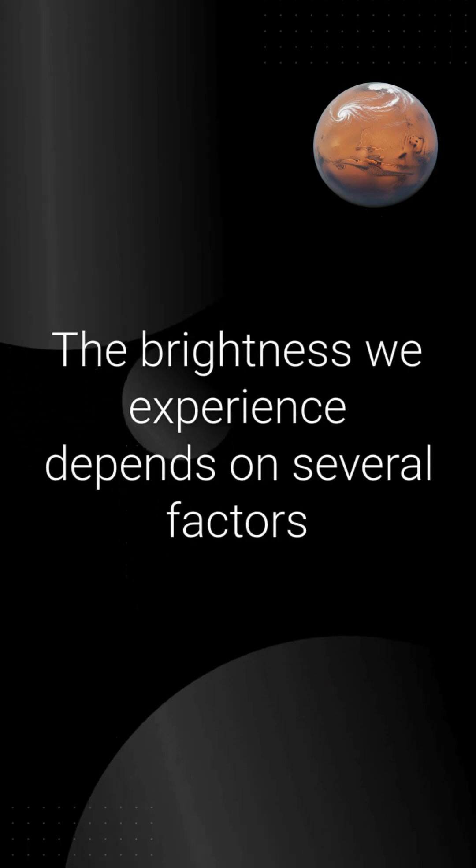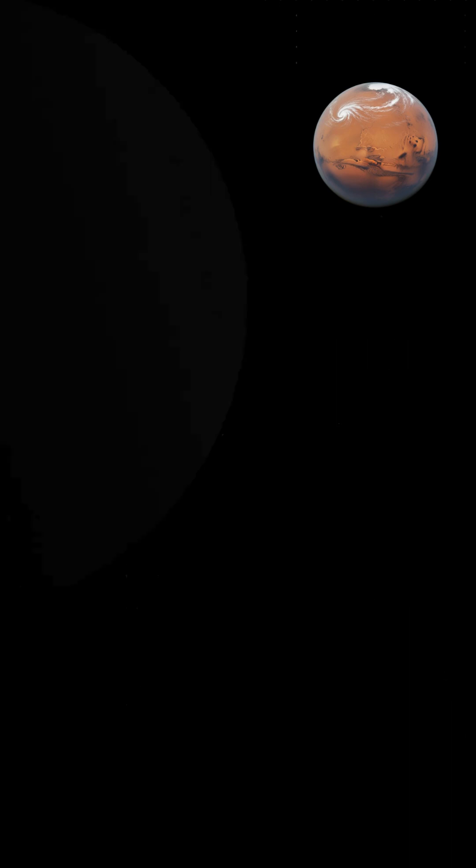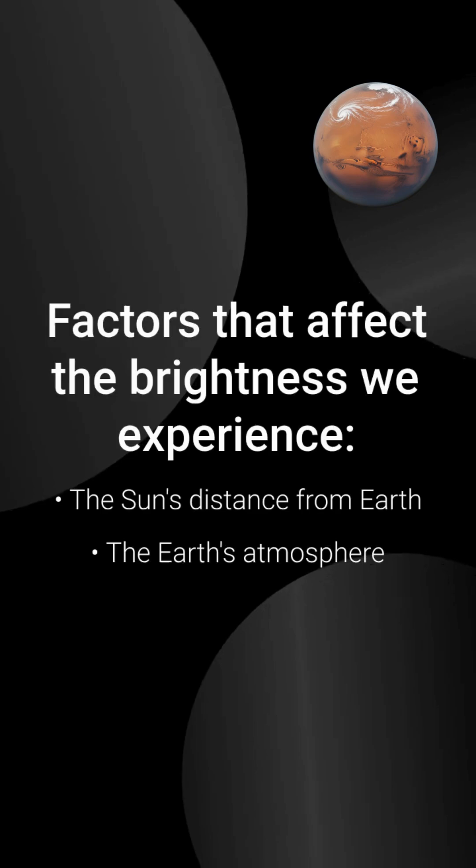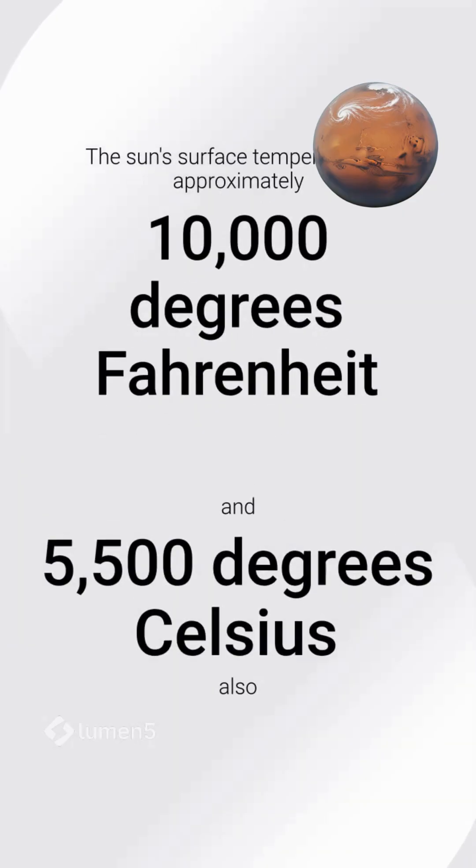The brightness we experience depends on several factors. The sun's distance from Earth affects perceived brightness, as does Earth's atmosphere, which filters some rays. The sun's surface temperature of approximately 10,000 degrees Fahrenheit, 5,500 degrees Celsius, also influences the wavelengths and intensity of light emitted.